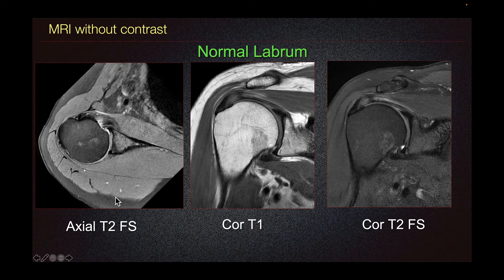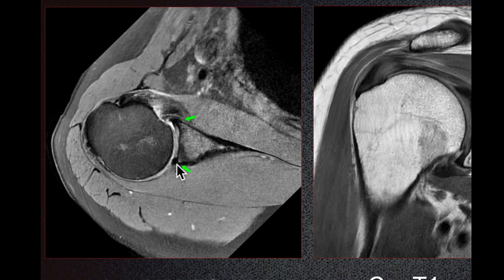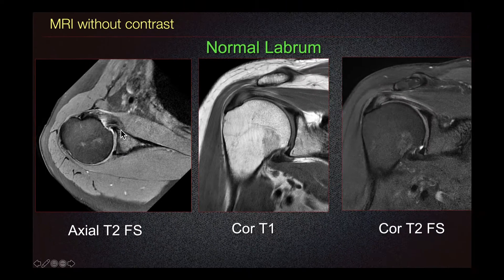In our axial T2 fat sat imaging here, we best demonstrate the posterior labrum and the anterior labrum, both with triangular shape and no increased signal.